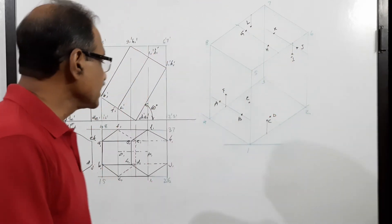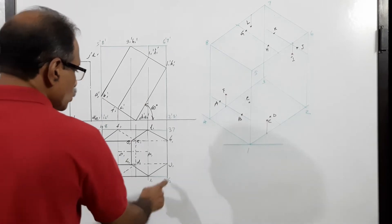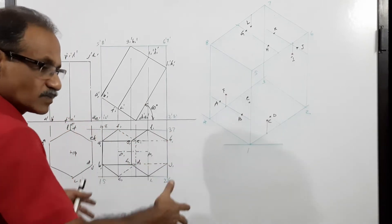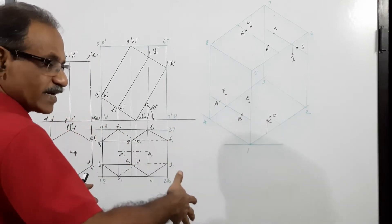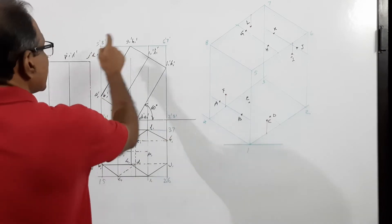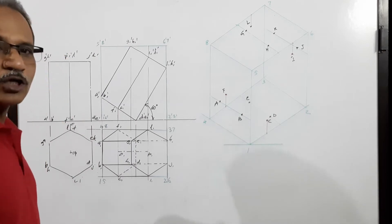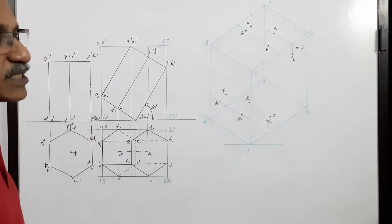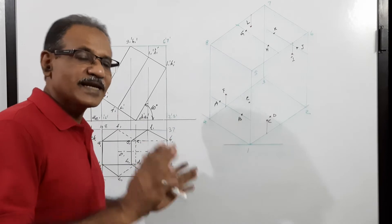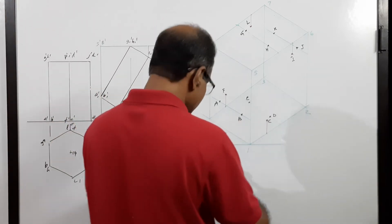Now inscribe that in a box: points 1, 2, 3, 4, 5, 6, 7, 8. This is the box which contains the prism — shown as the green box 1-dash through 8-dash. You have inscribed the prism in the green box. Now draw the two isometric axes at 30 degrees.